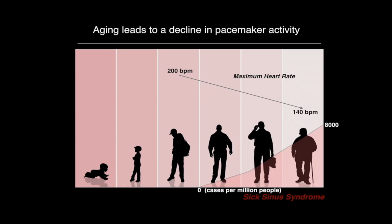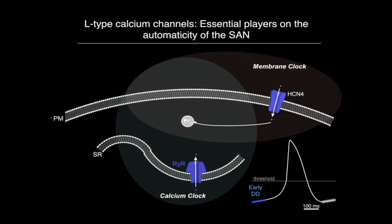Understanding the mechanisms behind this is important — what's happening in the pacemaker cells that they are failing to work as when we are young. To understand what's happening at the cellular level, I need to take you inside a pacemaker cell to show how the automaticity of the node works. Here we have a diagram of a pacemaker cell with the plasma membrane and sarcoplasmic reticulum, and pacemaker automaticity depends on proteins located both at the plasma membrane and in the sarcoplasmic reticulum.